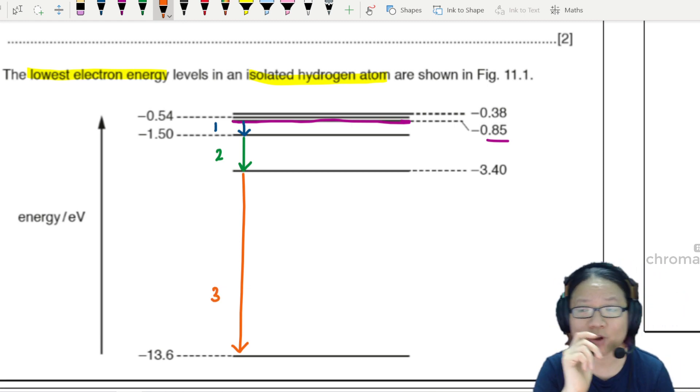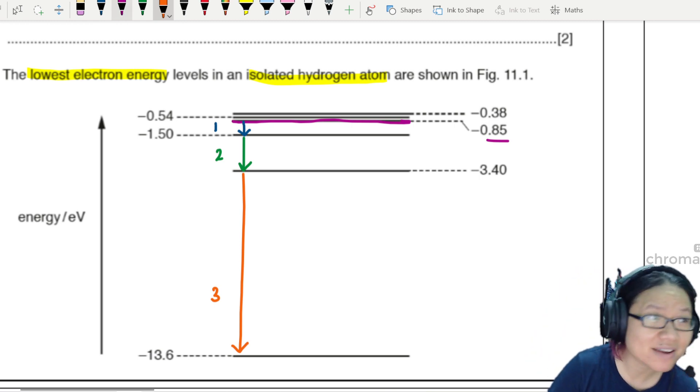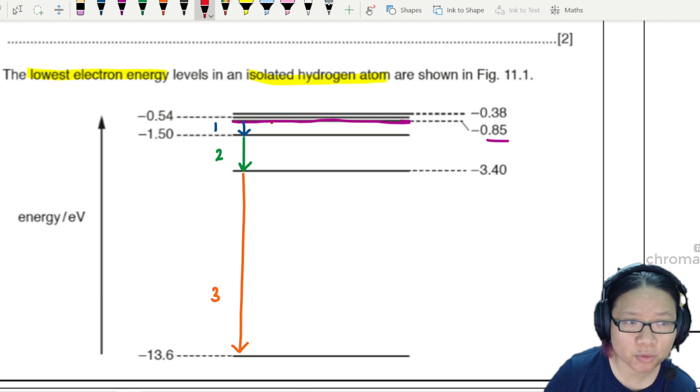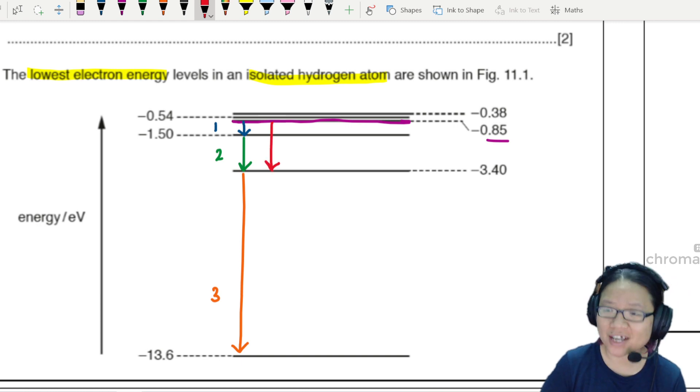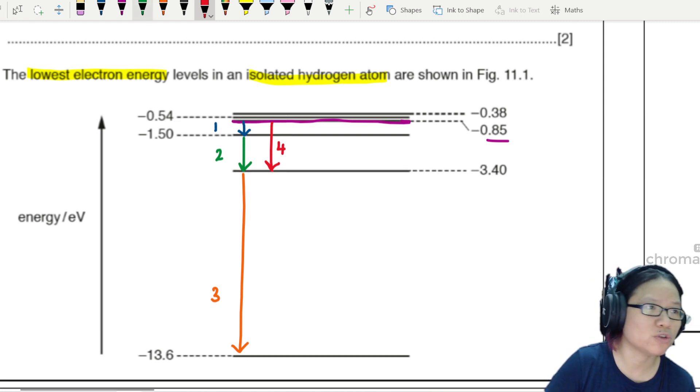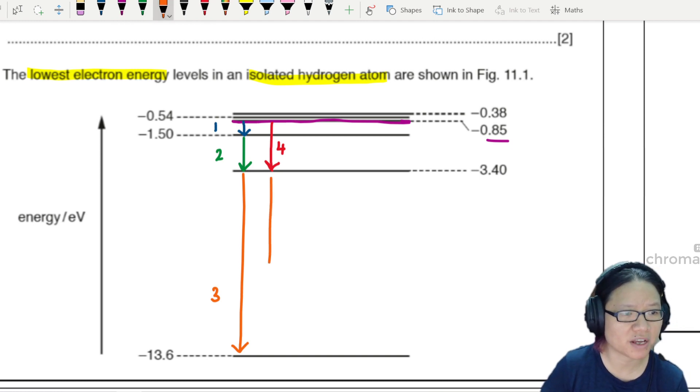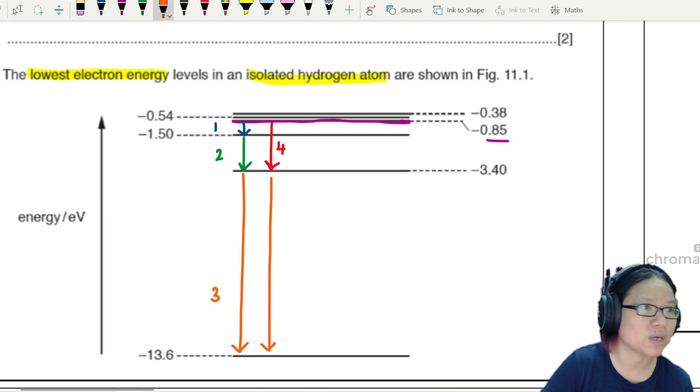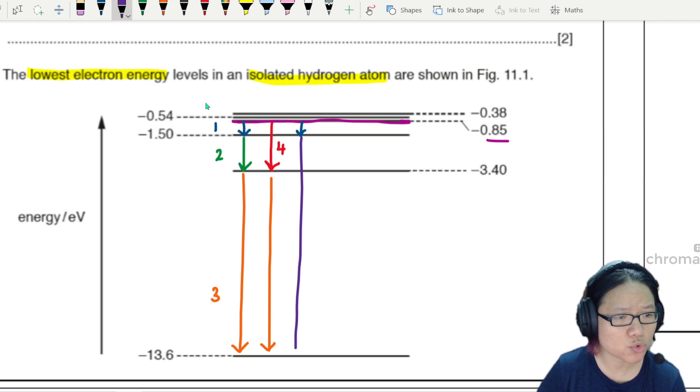Is there more? There's no saying you can only jump one level. Sometimes you can jump two levels, for example from negative 0.85 shortcut to negative 3.40 - this is wavelength number four. But if I continue the transition, it will still be the same as wavelength number three, so there's no difference. I can combine some more. We can also transition from wavelength number one, and then from negative 1.5 all the way down to ground state negative 13.6 - this is line number five.